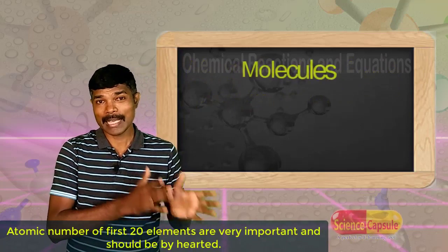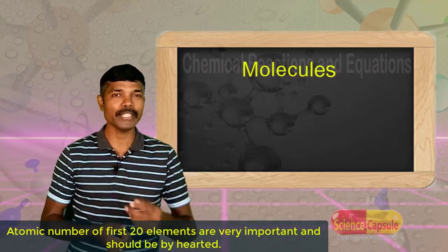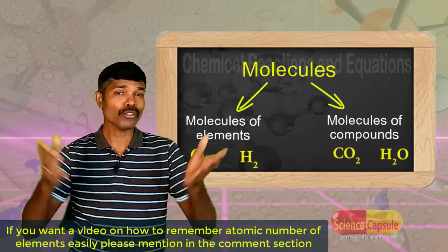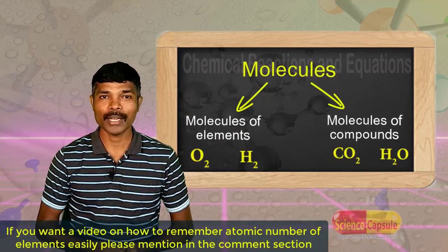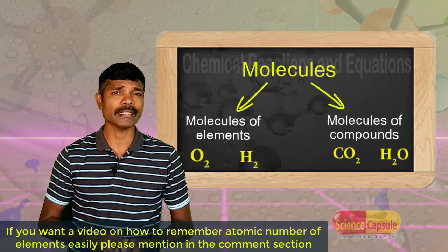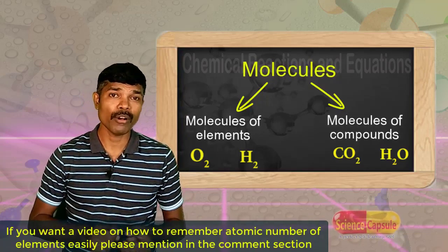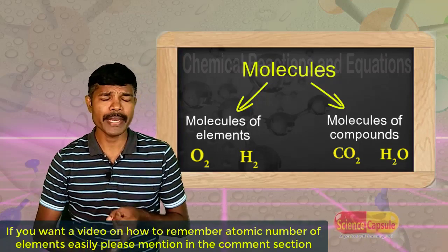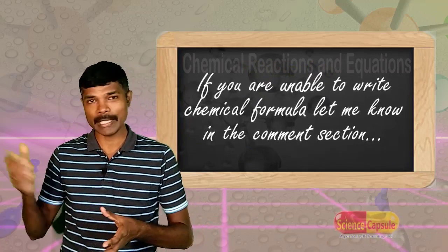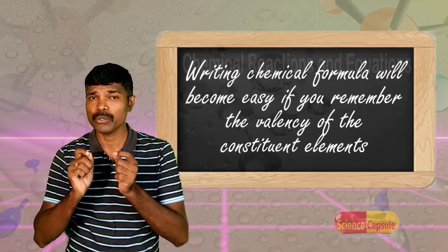Dear children, in the previous class in 9th standard, you must have studied molecules. Molecules are classified into two categories: molecules of elements and molecules of compounds. Most of the gases that exist in the universe are not independently available — they exist in the form of molecules, mostly diatomic molecules. Knowing the chemical formulas of molecules and compounds is very much essential, as these formulas will play a role in this chapter and the coming chapters.